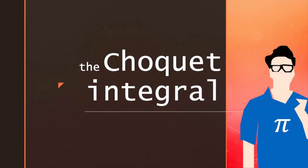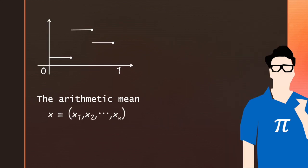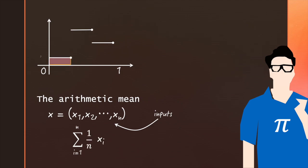However, the Choquet integral is also often thought of as a kind of mean or averaging function. Relating it back to our step functions, the arithmetic mean can be seen as taking the sum of vertically cut rectangles, where we multiply each of the input values by their width. Of course, the combined area would be the same using horizontal rectangles.